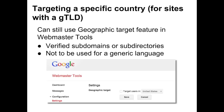When using rel alternate hreflang, you can still use Webmaster Tools' geographic target feature for verified subdomains or subdirectories you'd like to target to a particular country. Be aware that you can only target a verified site to one country. So if you want to target users from two different regions but only have a general language page, geo-targeting in Webmaster Tools won't be possible. For instance, if you want to target Portuguese users in both Portugal and Brazil but only have a general PT language page, rather than PT-PT and PT-BR, you'll limit your audience to only one of your two desired locations.